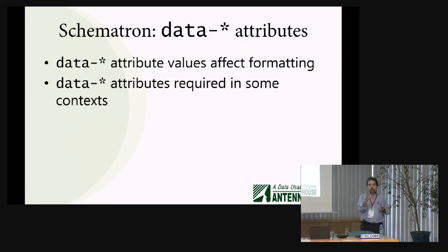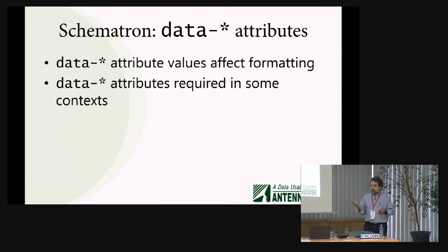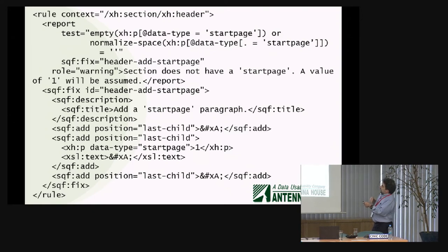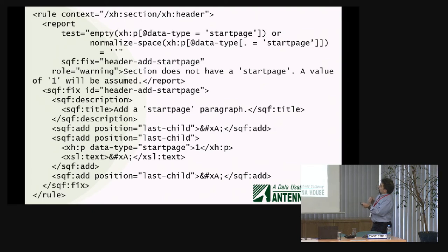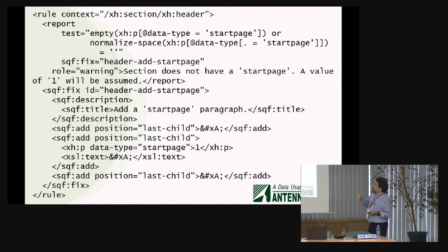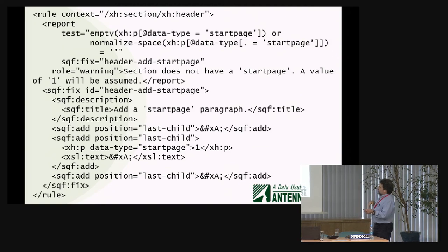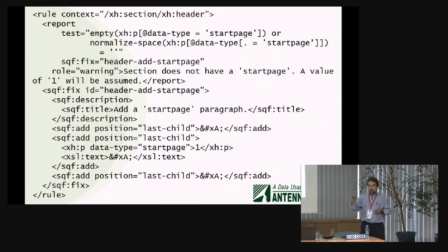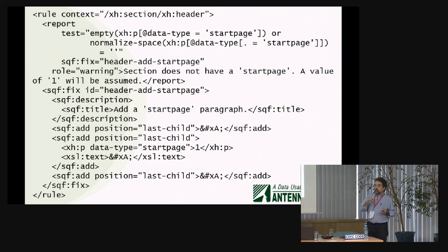There is Schematron for validating things. The good thing about data attributes is you can put in whatever you want and it's still valid HTML. The bad thing is you can put in whatever you want and it's still valid HTML, but it might not make sense to your processing. With Schematron for checking the data attributes, in this case we're checking that the header has a paragraph with a data-type attribute of start-page. This is one of the conventions for putting in the initial page number of a chapter in the HTML, which is then carried through to the processing. There's also a Schematron quick fix so that in the editor, as well as getting warned about the problem, you can just click and it'll insert page one for you.